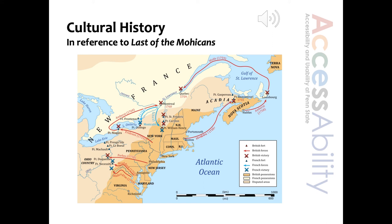This French and Indian War map was used in an English course about 19th century American literature in relation to the novel The Last of the Mohicans. In this case, we focused particularly on the location of the forts on the Hudson River, since that's where the novel took place, but we did include some information about Pennsylvania. We also described a map of the Missouri Compromise regarding the status of slavery in Western territories, again for another novel, Uncle Tom's Cabin.